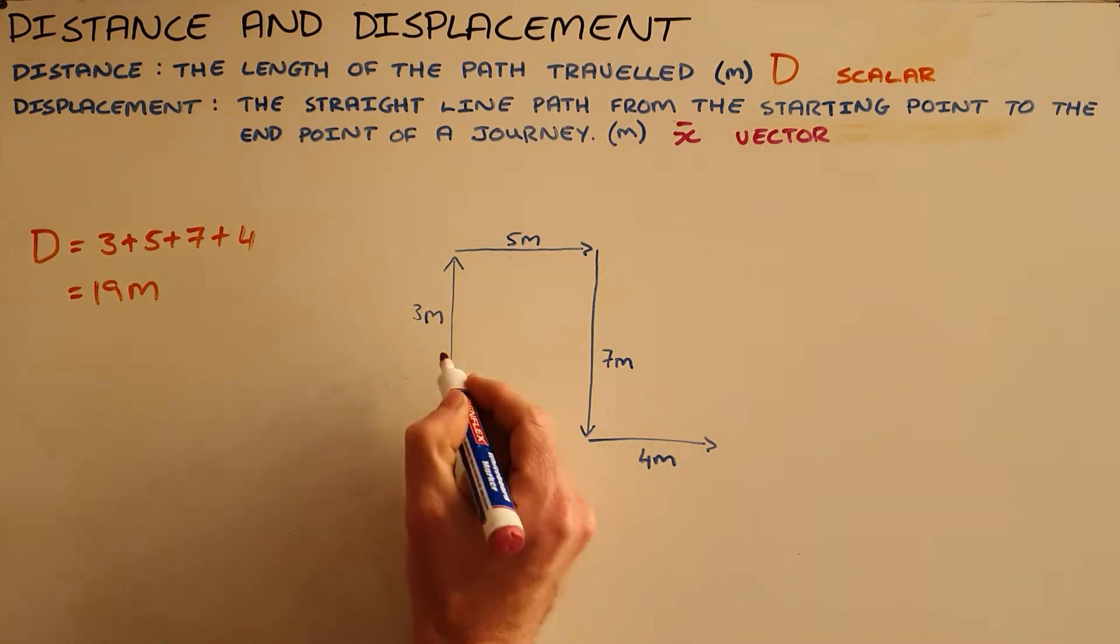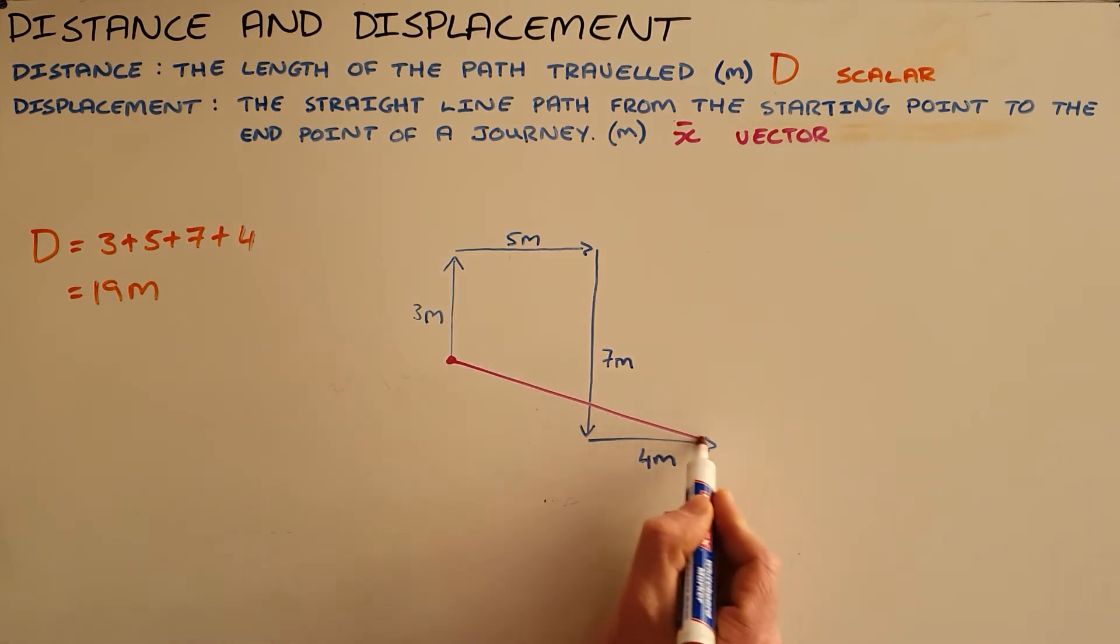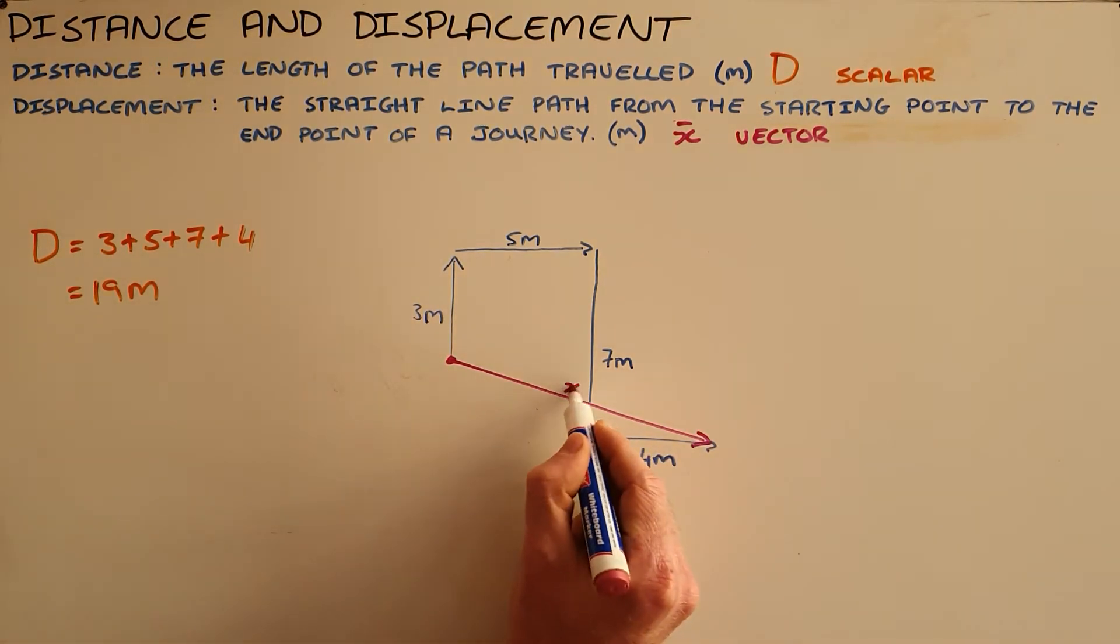We would find the displacement of this object by drawing a straight line from the starting point to the end point of this journey, and that would be defined as our displacement.